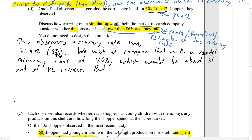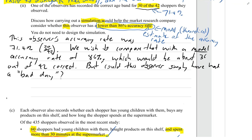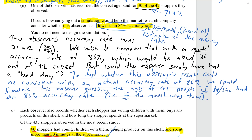Could this observer simply have had a bad day? To test whether this observer's result could be consistent with an actual accuracy rate of 86%, we would run a simulation of this observer meeting 42 people and guessing their age, if they had an 86% accuracy rate — that is, if the model was true. We would repeat this process many, many times to create many, many samples of 42 people's ages being guessed.